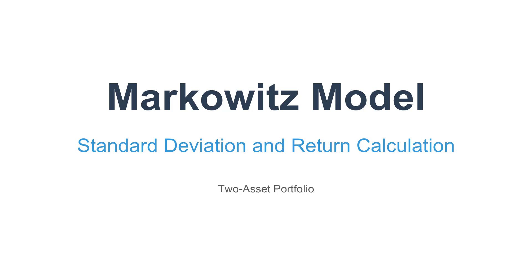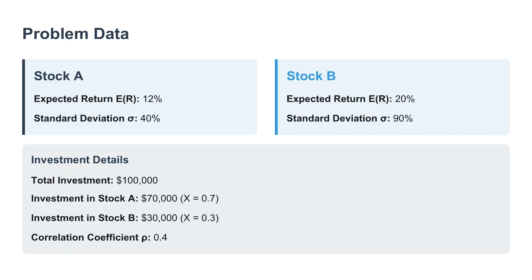That's our mission for this deep dive. We're taking a pretty dense academic lesson and walking through it step by step. We want to figure out two core things for a hypothetical portfolio. First, what we expect to earn — the expected return. And second, the standard deviation, which is just the technical term for how we measure the portfolio's risk. We have this structured in three main parts: first, we'll lay out all the inputs; second, we'll calculate that expected return, written as E of R-A-P; and third, we'll get into the really interesting part — setting up the formula for portfolio variance and standard deviation, that's sigma P squared and sigma P.